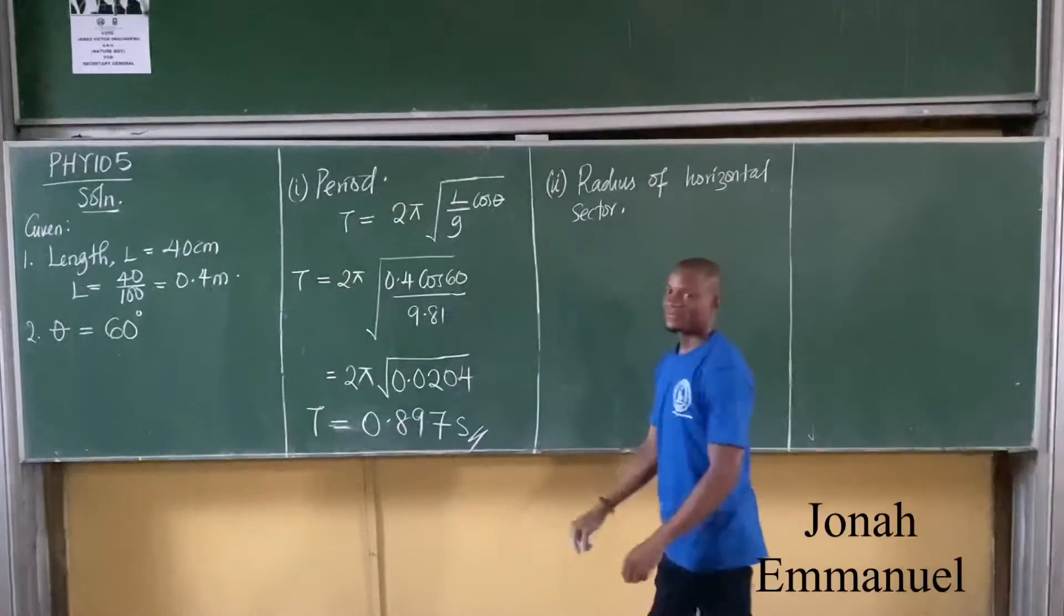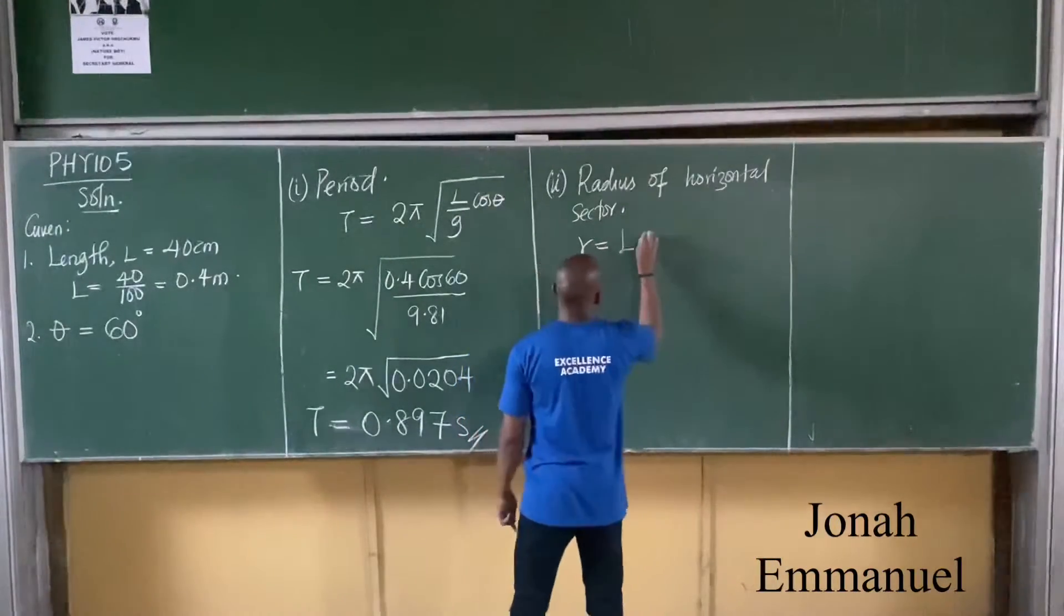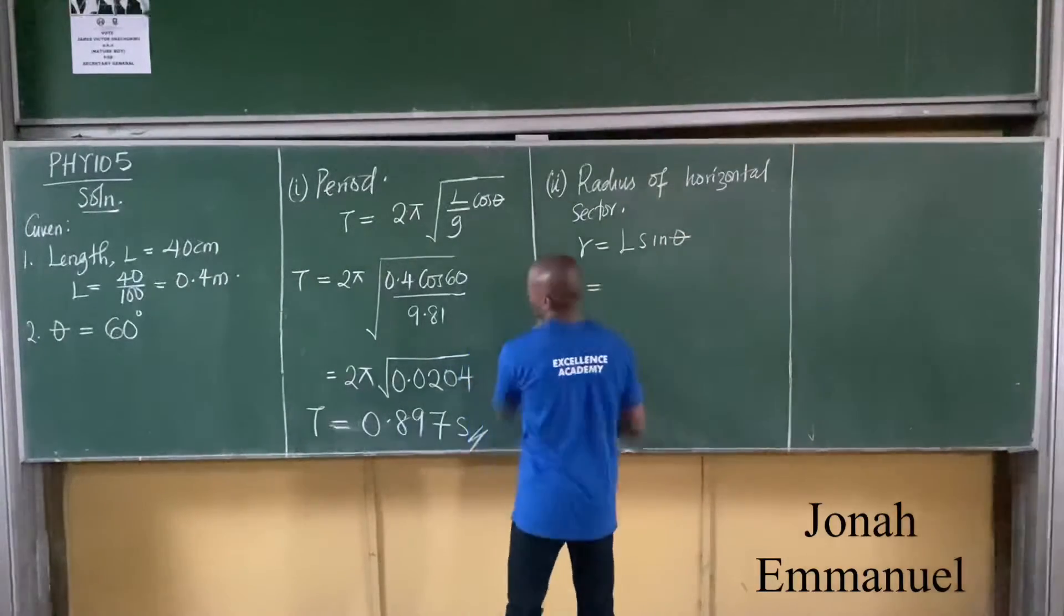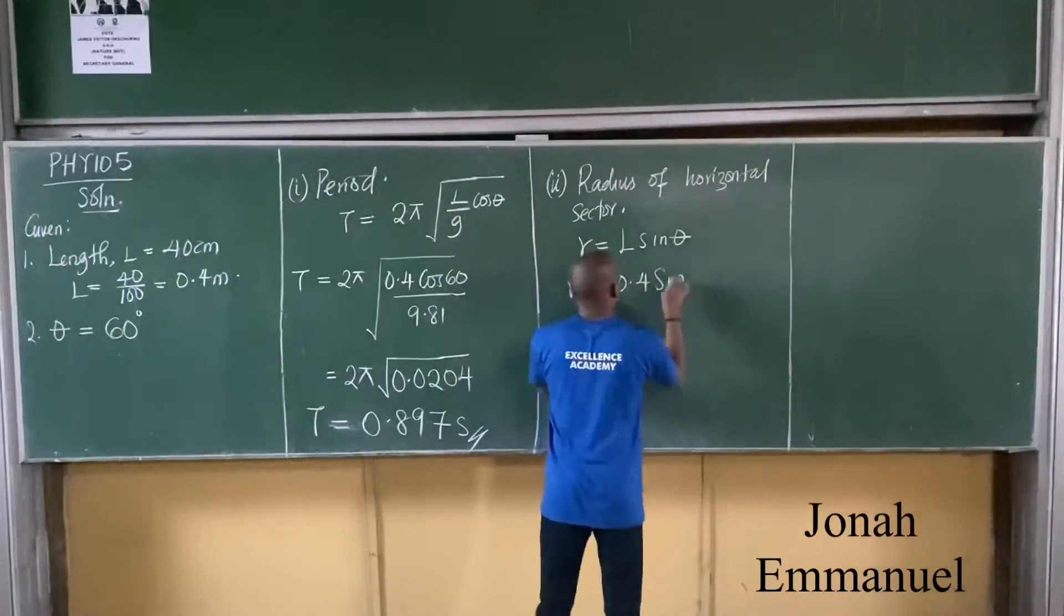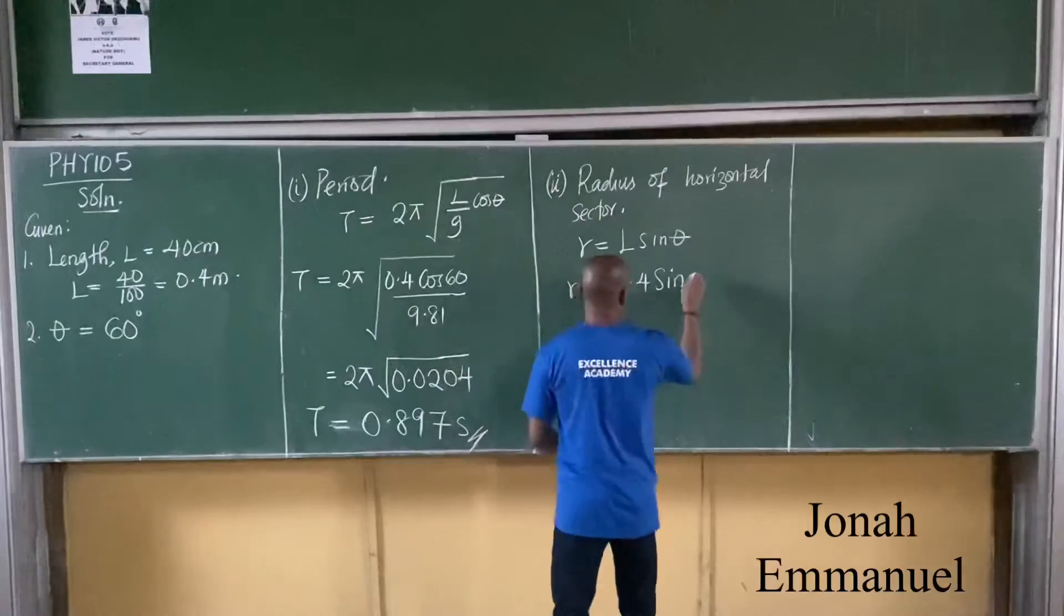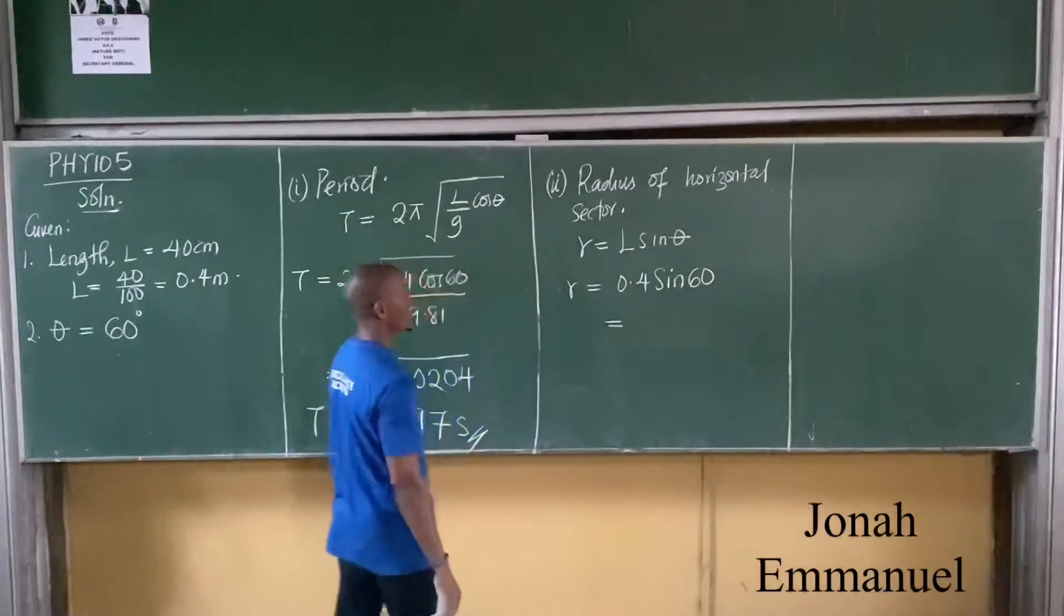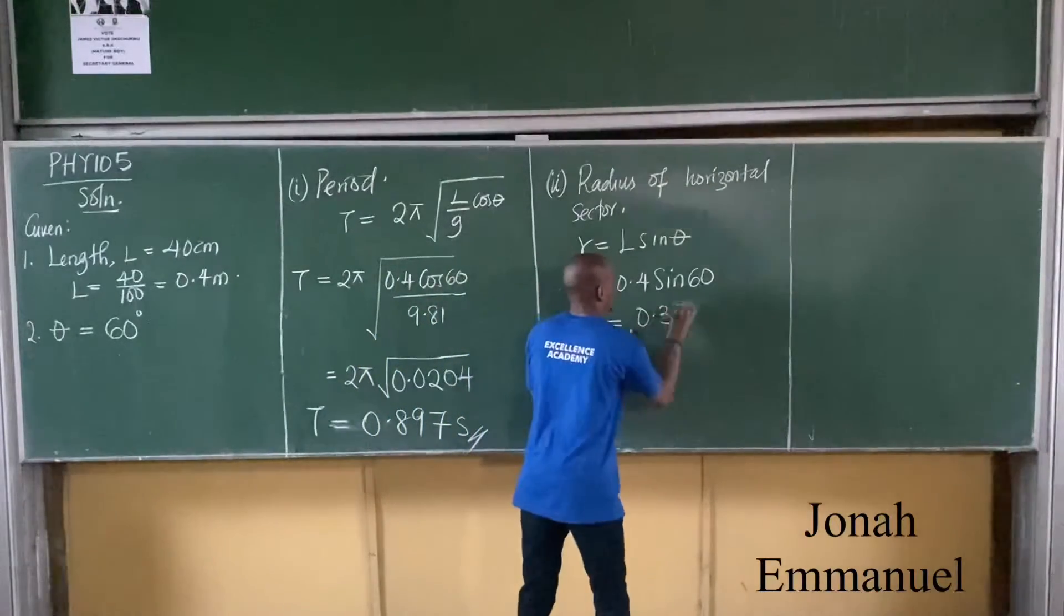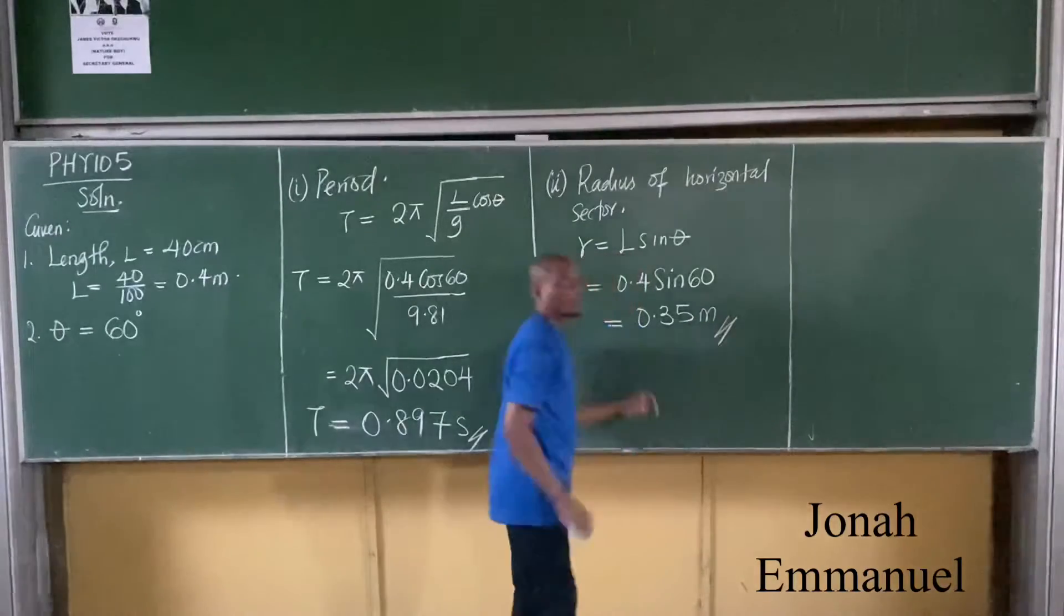Which formula do you use? R is equal to L sine theta. So R is equal to 0.4 sine 60. What have you got? 0.35 units meters. That's it.